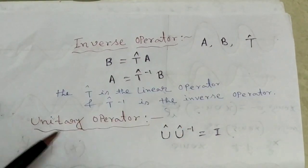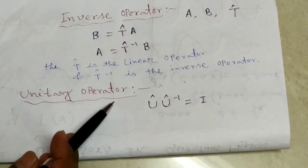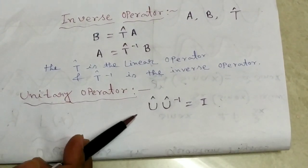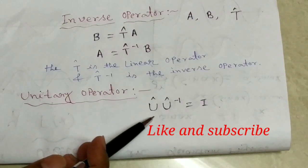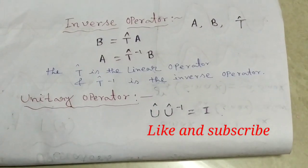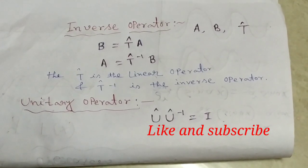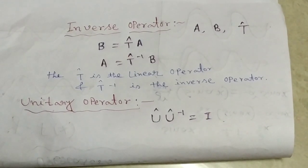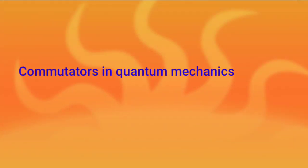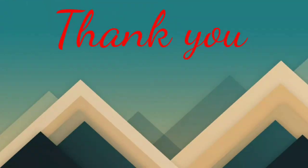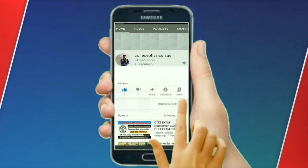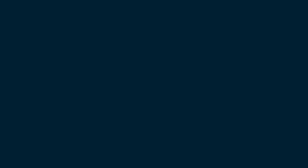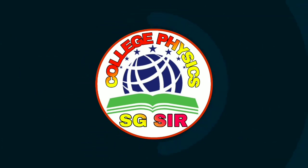An operator is said to be unitary if its inverse and adjoint are identical, so U times U-inverse equals I — this is called the unitary operator. So here we discussed different types of operators. In my next class I will discuss commutator relations and some important problems related to them.